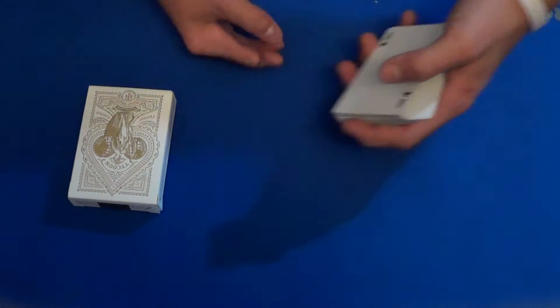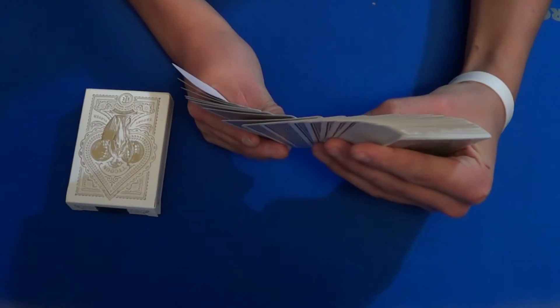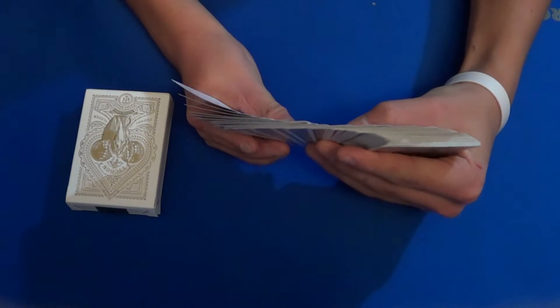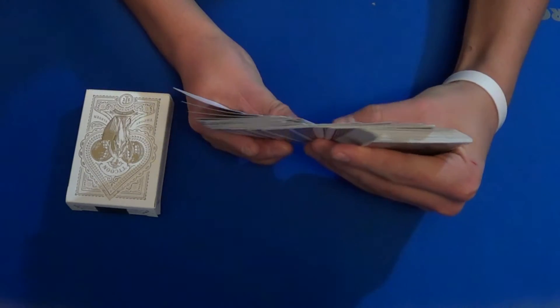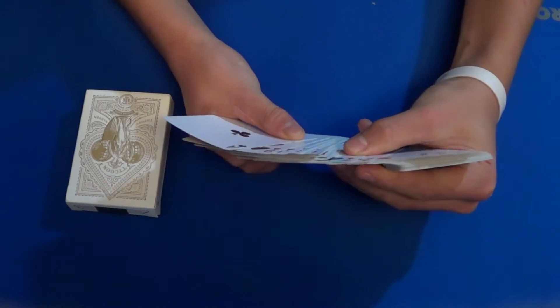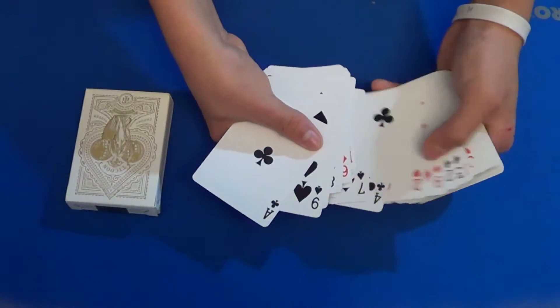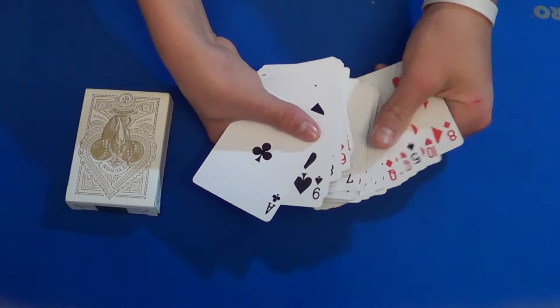So look, now J-Dawg, I'd like you to name one card. Seven of clubs. So he has named the seven of clubs. Now he could have named any card in the pack.